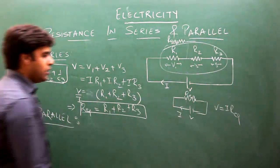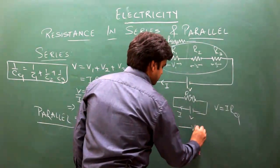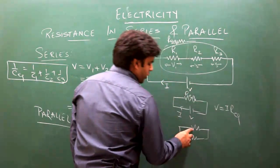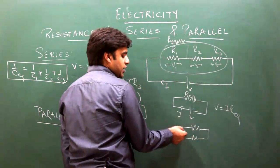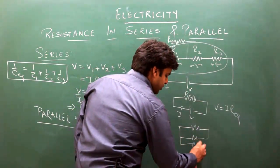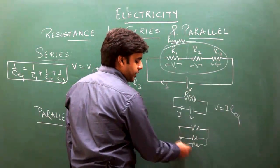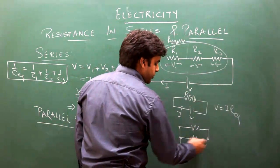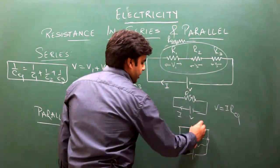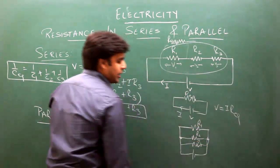In parallel combination, resistances are connected such that one end of all resistors connects to a single point, and the other ends connect to another single point. R1, R2, and R3 are in parallel.